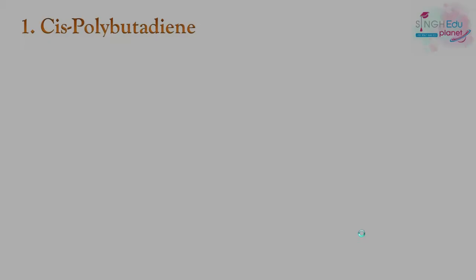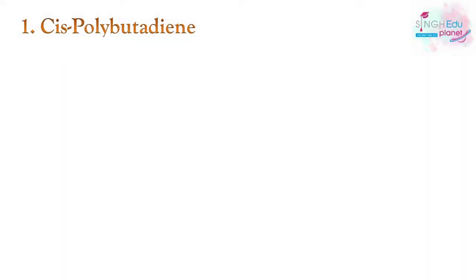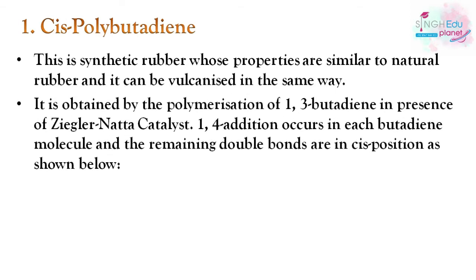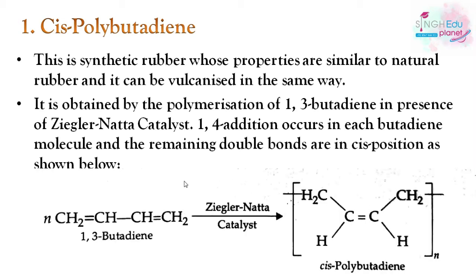The first example of synthetic rubber is polybutadiene. This synthetic polymer has properties similar to natural rubber and can be vulcanized the same way. It is prepared by polymerization of 1,3-butadiene in the presence of Ziegler-Natta catalyst. 1,4-addition occurs in each butadiene molecule and the remaining double bonds are in the cis position.